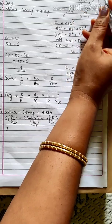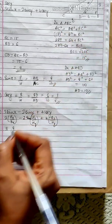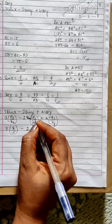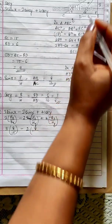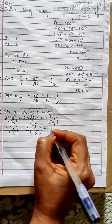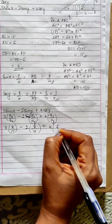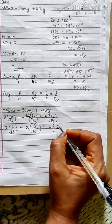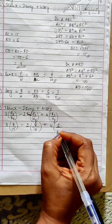With respect to angle x, the perpendicular is 8 and the base is BC which is 15. With respect to angle y, the perpendicular is 6, and the hypotenuse is 10.